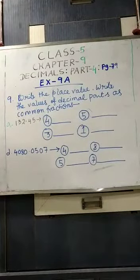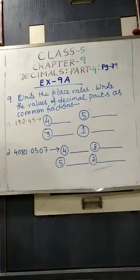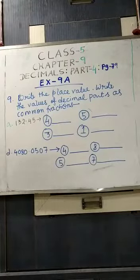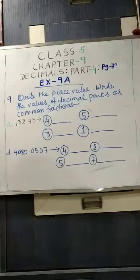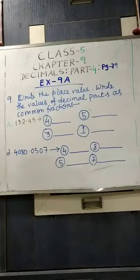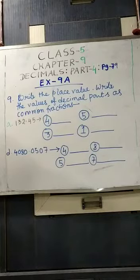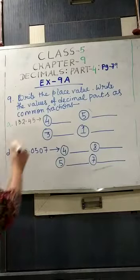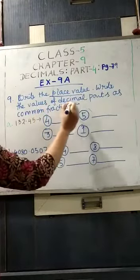Namaskar students, we will continue chapter number 9, decimals, part number 4, page number 79, exercise 9A. So open your book and turn to page number 79. You can see sum number 9 I have written on the board. Write the place value and write the values of decimal parts as common fractions.